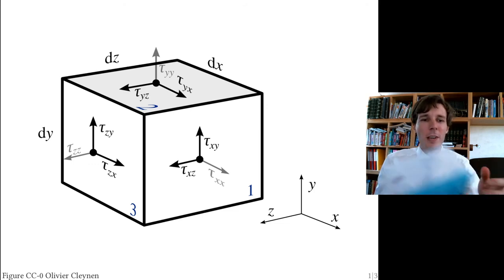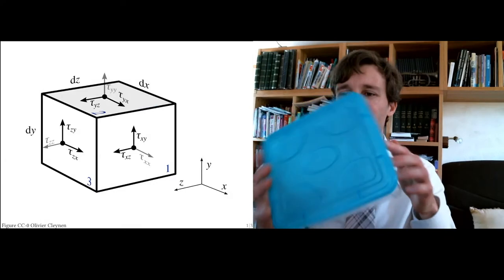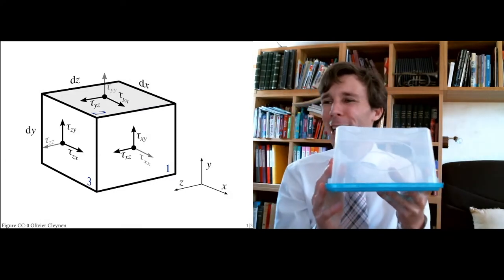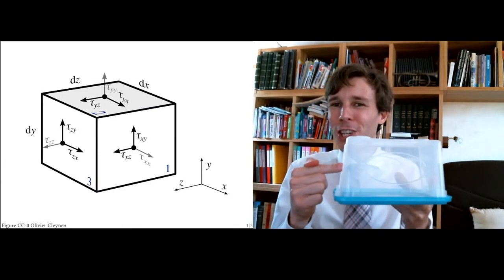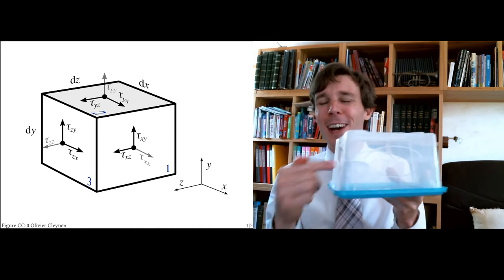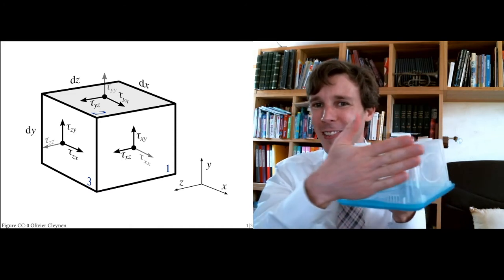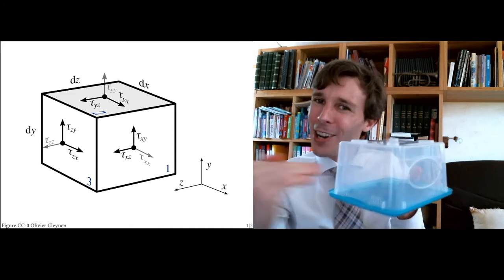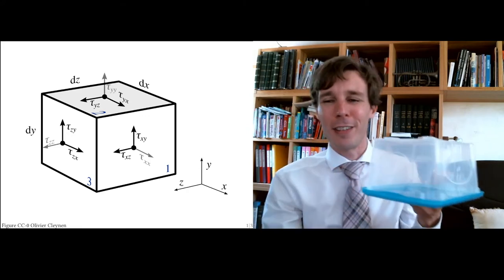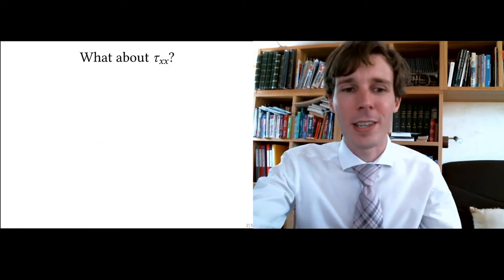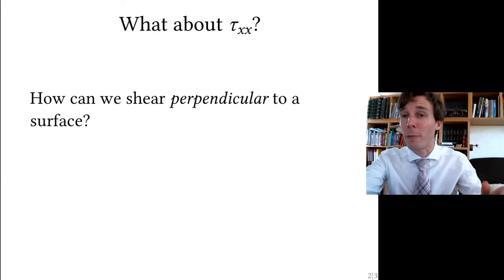If I take here a cube—and this, by approximation, would be a cube, a plastic box—if I try to shear perpendicular to some area, it's not gonna work. I can shear in this direction or that direction, but how could I shear through the side of the cube? The answer is, on a plastic box, it's not possible to shear through the surface.